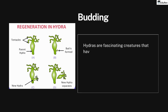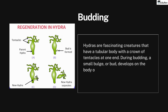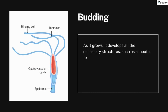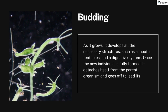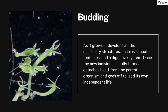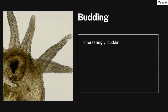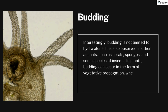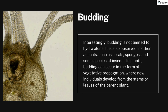Hydras are fascinating creatures with a tubular body and a crown of tentacles at one end. During budding, a small bulge or bud develops on the body of the hydra, grows into a miniature version of the parent, and develops all necessary structures such as a mouth, tentacles, and a digestive system. Once fully formed, it detaches and leads its own independent life. This can occur repeatedly, forming a cluster of genetically identical individuals. Budding is also observed in corals, sponges, and some insects, and in plants as vegetative propagation.